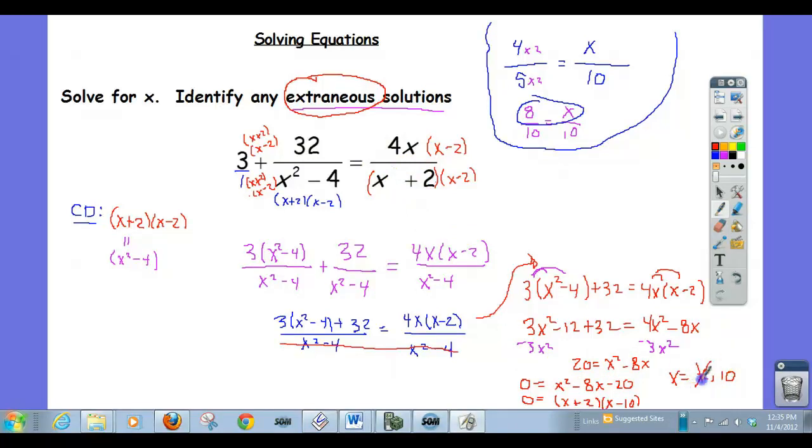That can't be an answer. What we're really finding is like this is a graph. The right side of this equation is a graph. The left side is a graph. When do they intersect?